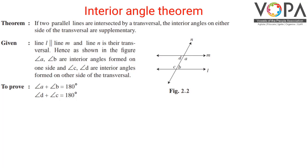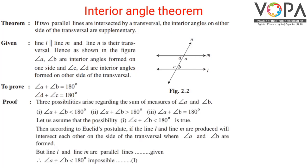To prove: angle A plus angle B is equal to 180 degrees, and angle D plus angle C is equal to 180 degrees.